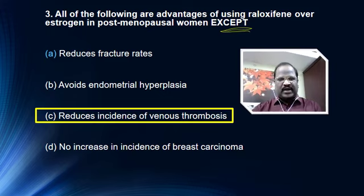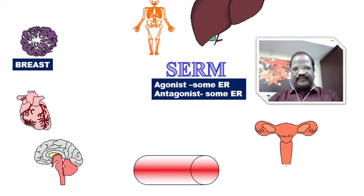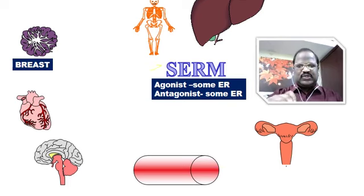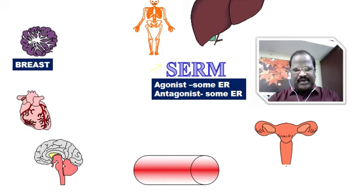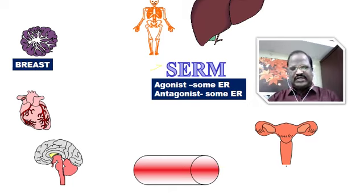The right answer is option C. Now let's go for discussion of SERM from basic to advanced. SERM — Selective Estrogen Receptor Modulator. As the name indicates, these are drugs having agonistic action on some estrogen receptors and antagonistic action on other estrogen receptors.